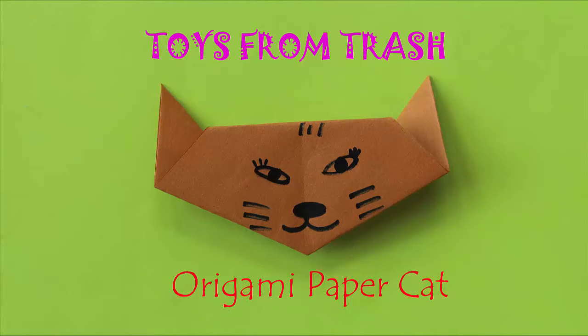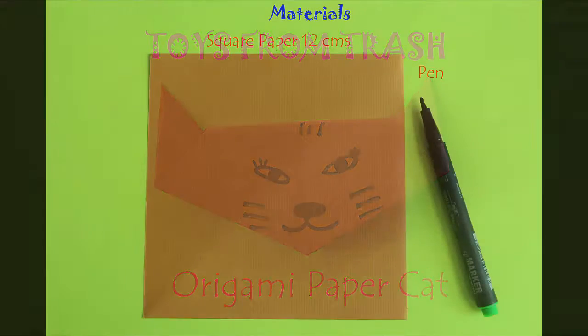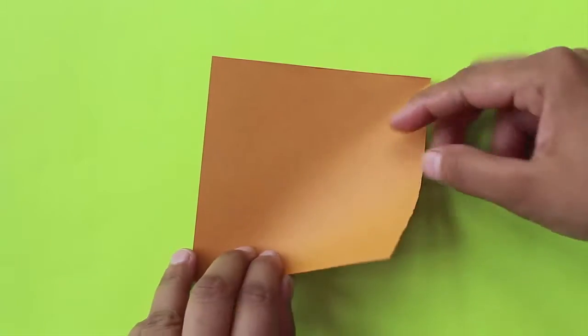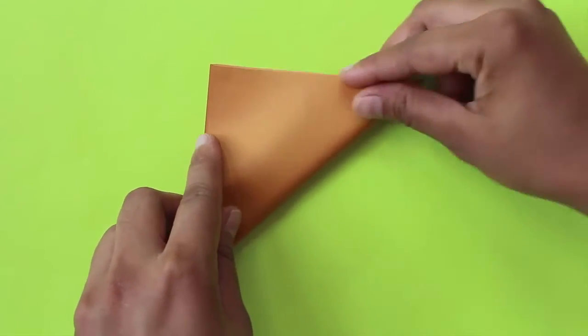Well, this origami paper cat is also very simple to fold. It is appropriate for very little children. You will need a 12cm edge square and a black sketch pen.